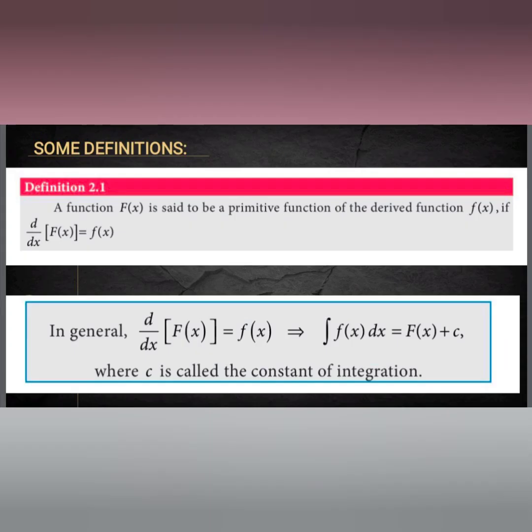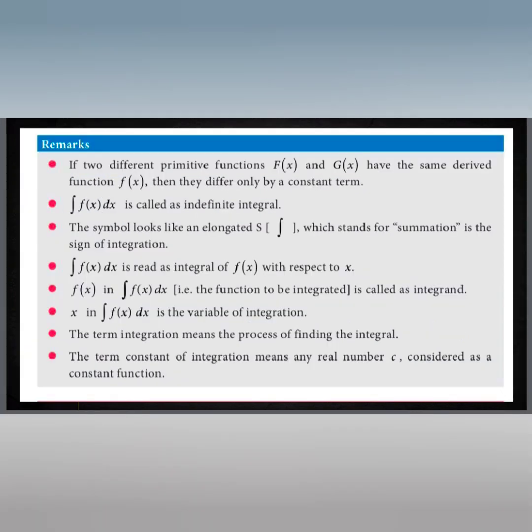Now we will see one more definition. A function F(x) — capital F(x) — is said to be a primitive function. Capital F(x) stands for the original function, and while differentiating it once again we will get the derived function, that is small f(x). If two different primitive functions F(x) and G(x) have the same derived function, they differ only by a constant term.